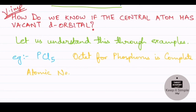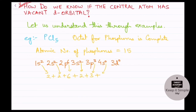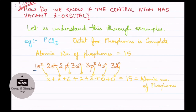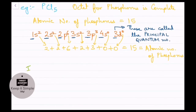The octet for phosphorus in PCl5 is complete. The atomic number for phosphorus is 15 and the electronic configuration is 1s2 2s2 2p6 3s2 3p3 4s0 3d0. When you add up the superscript numbers — because they represent electrons — the sum should be equal to the atomic number of phosphorus, which is 15. The coefficients of s, p, d, f are called the principal quantum number.